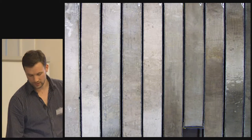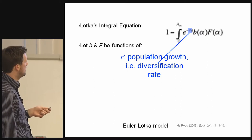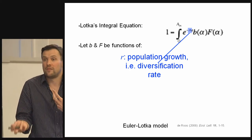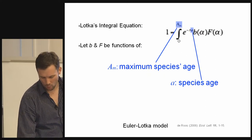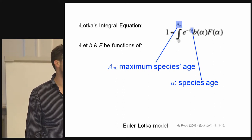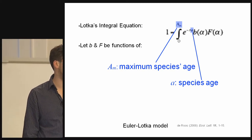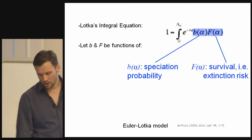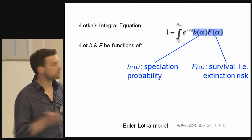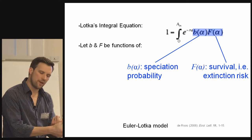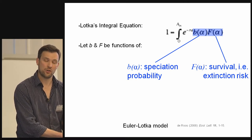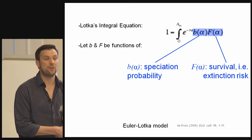R is our population growth or diversification rate. We're going to look across a load of different species ages up to the maximum species age — this means we can test Van Valen's law of constant extinction risk with age. We then want births and deaths — speciations and extinctions — and they're going to be dependent on a state alpha. That state is defined by the number of competing species and the climate, by which I mean the oxygen isotope record, which is a proxy for temperature and ice sheet volume.